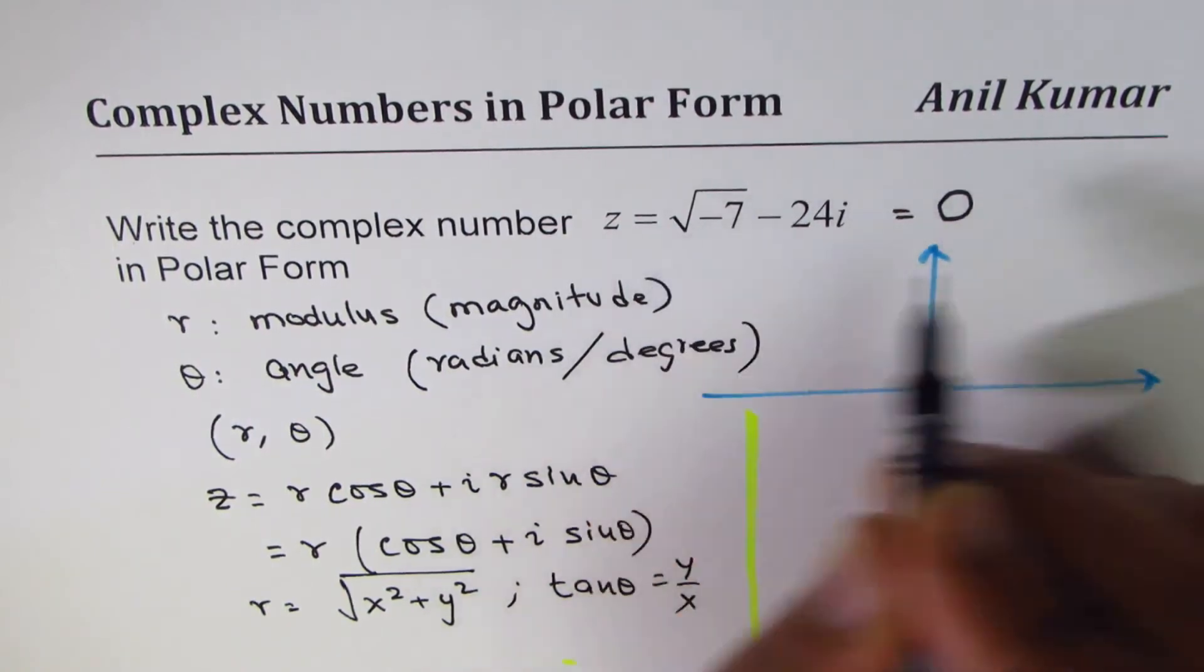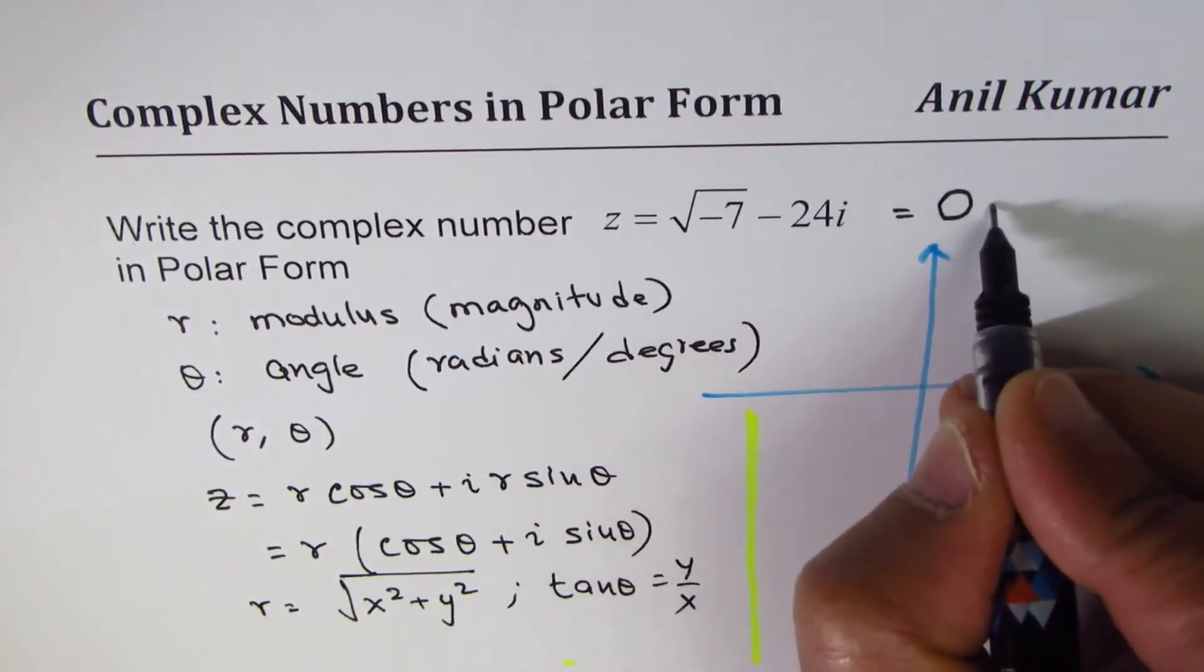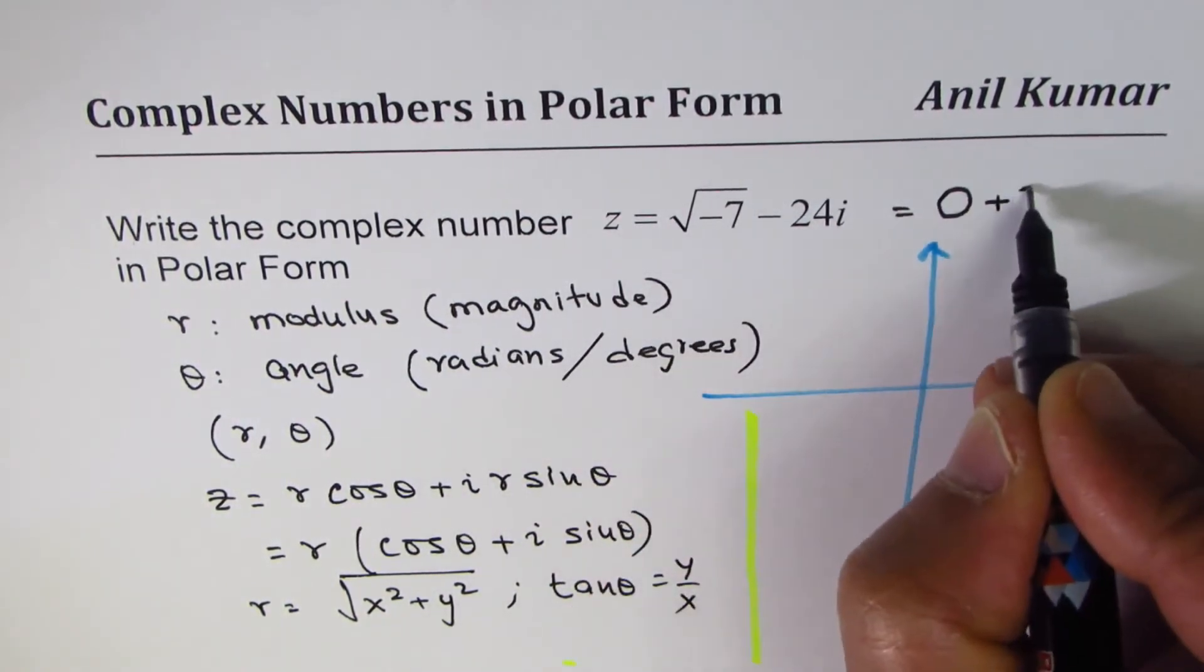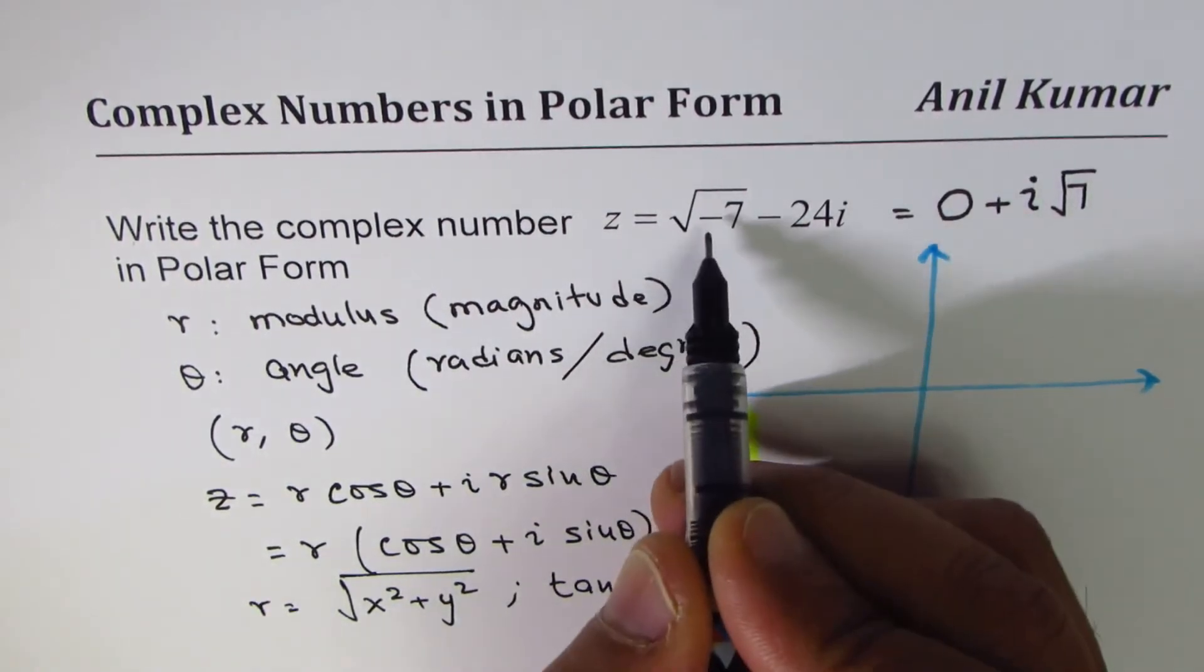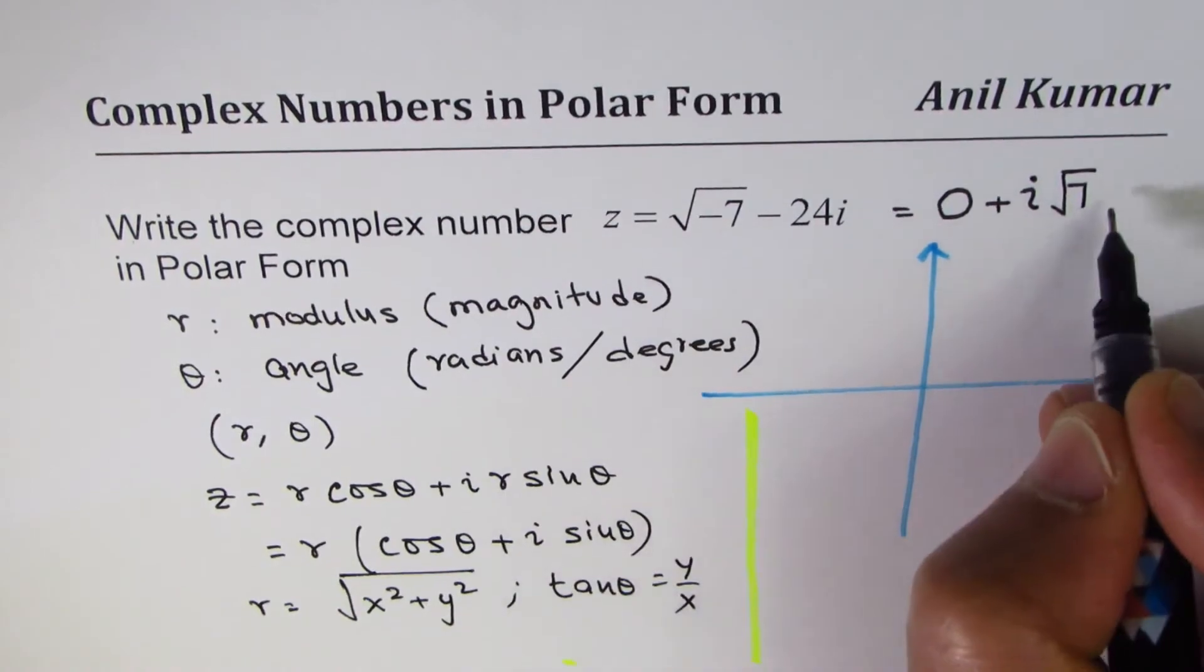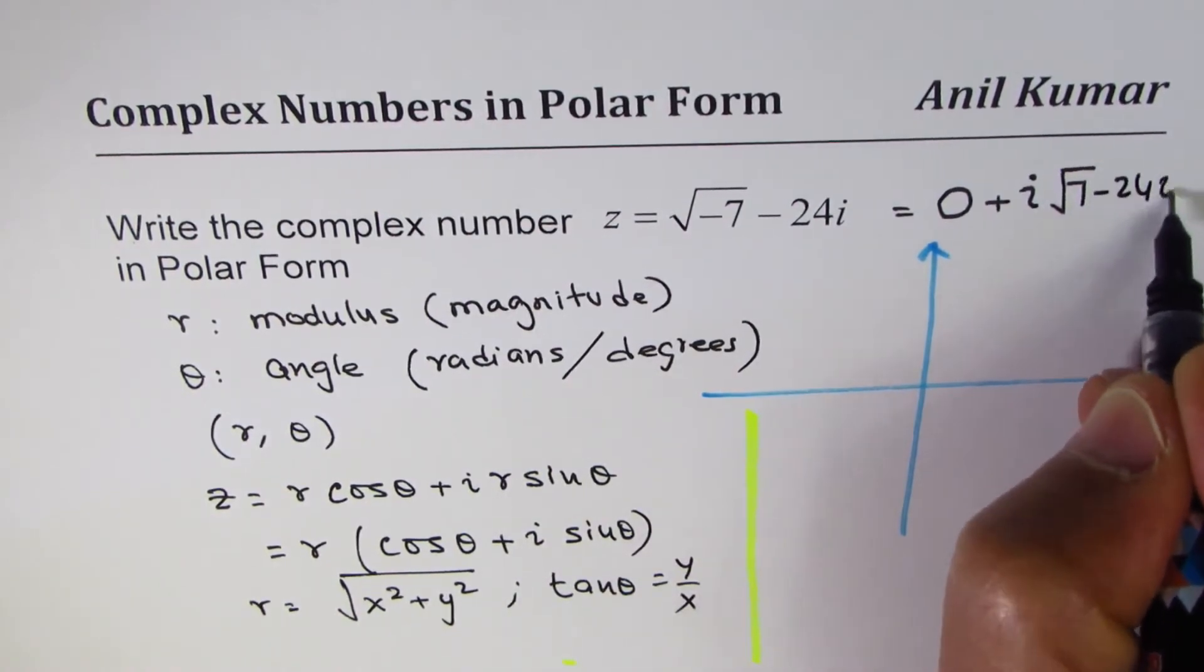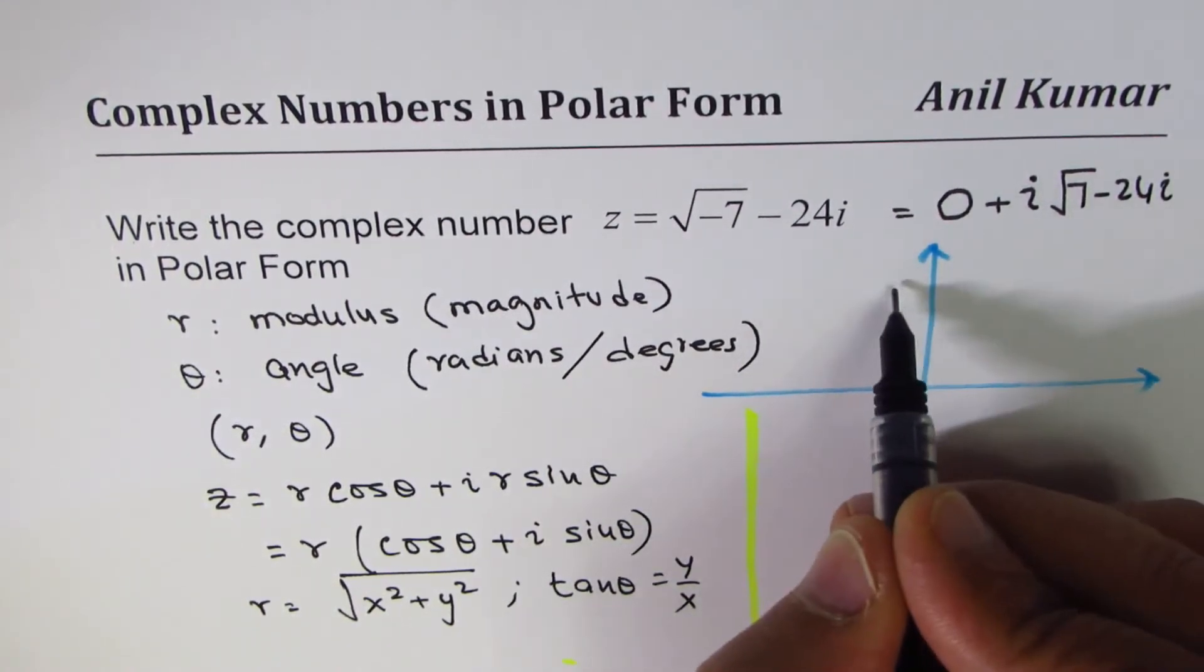And I have this complex part: square root of minus 7 could be written as plus i square root 7, because square root of minus 1 is i, right? Then minus 24i.